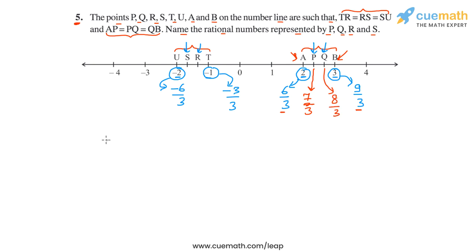So let's write these observations. P represents 7 by 3, and Q represents 8 by 3.